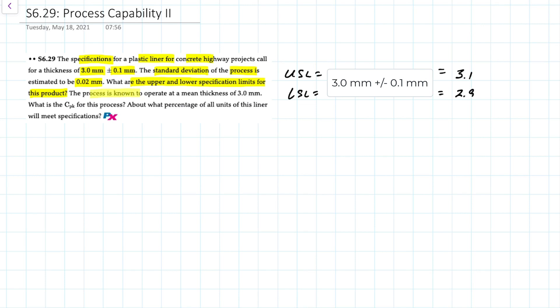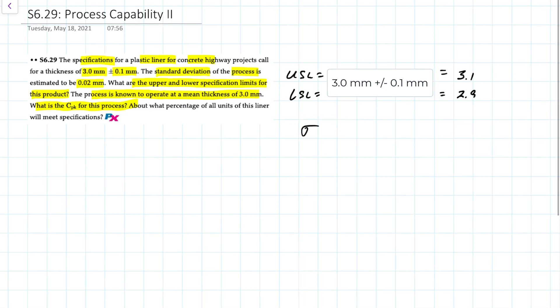We're then told that the process is known to operate at a mean thickness of 3.0 millimeters. And so what's the CPK for the process? We know the standard deviation is 0.02, and X bar is equal to 3.0 millimeters.